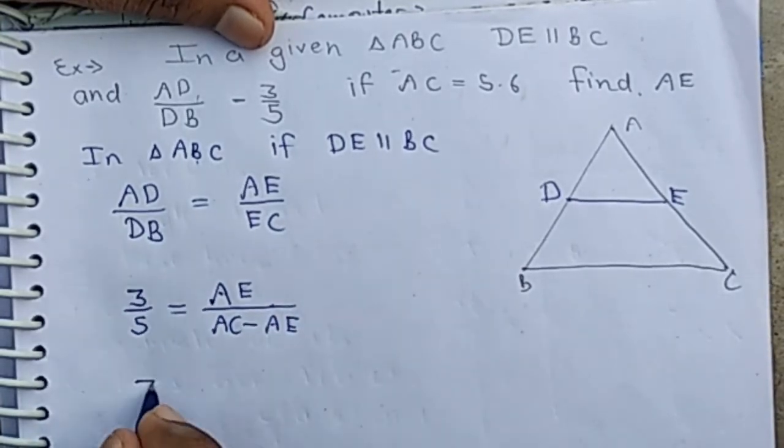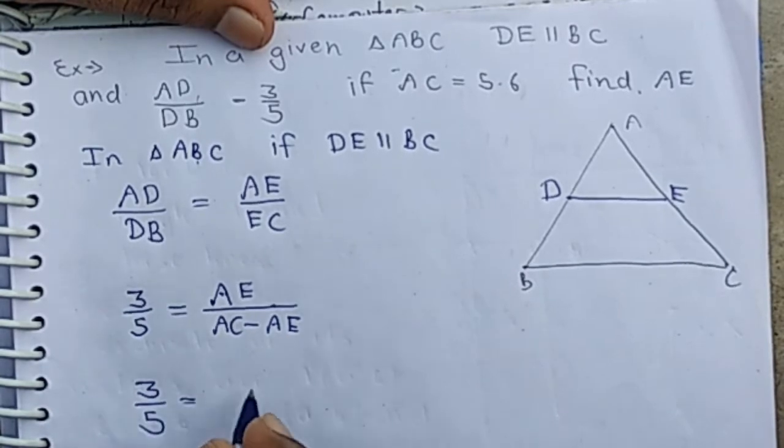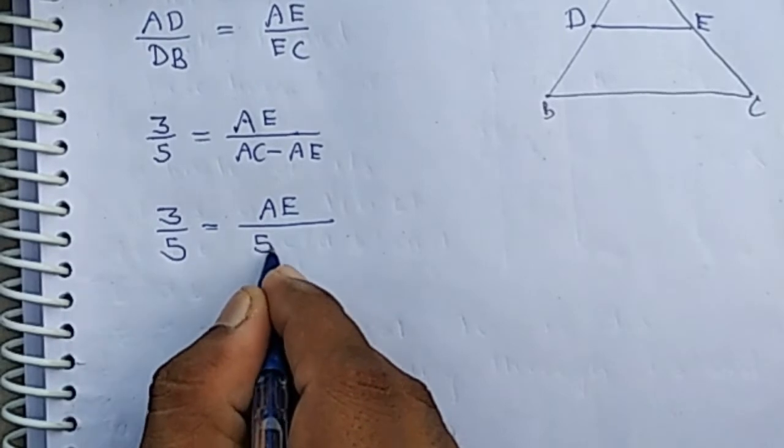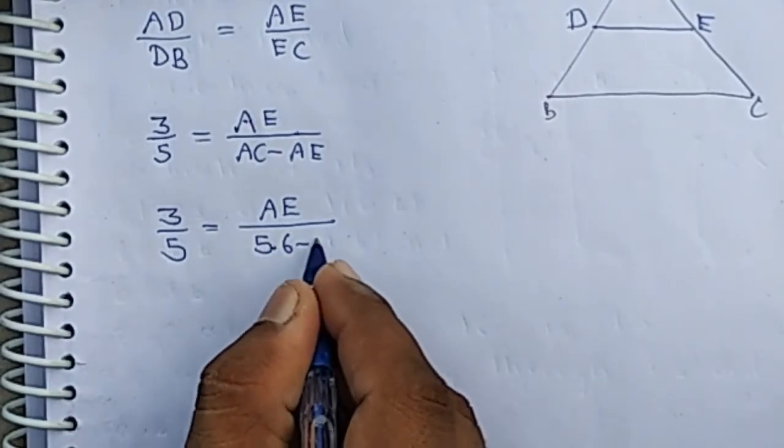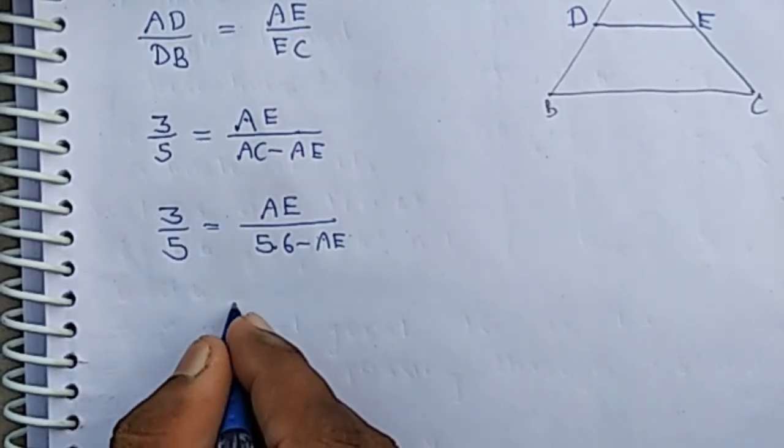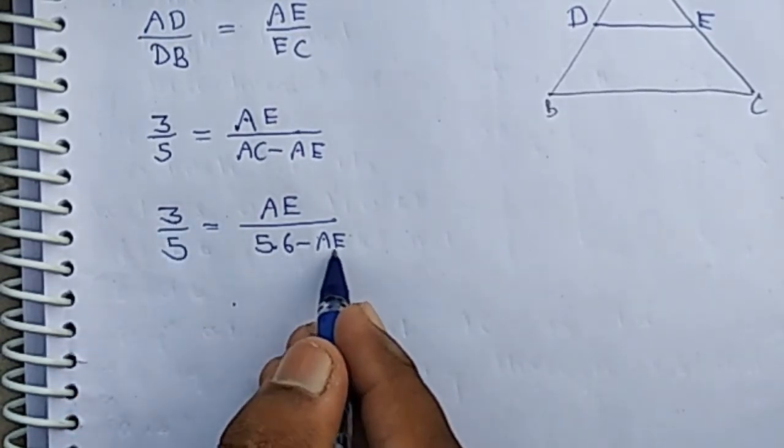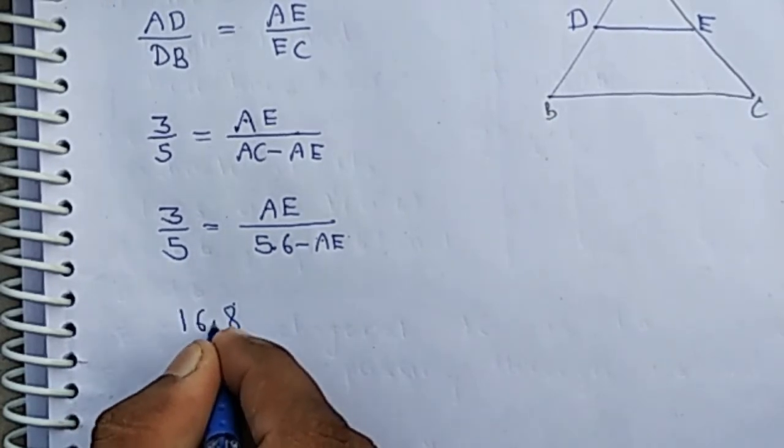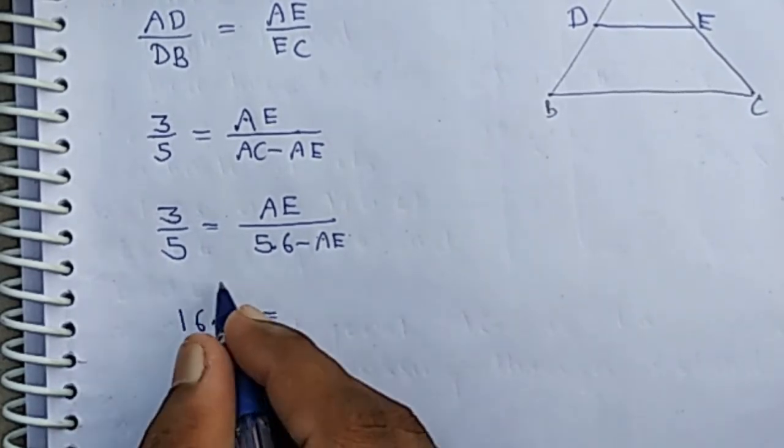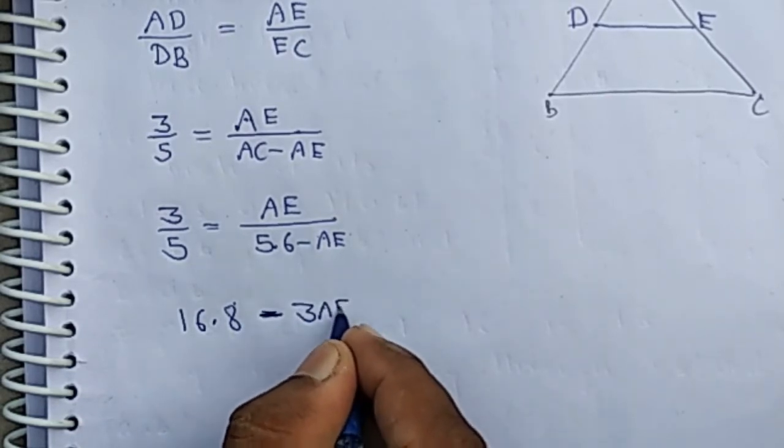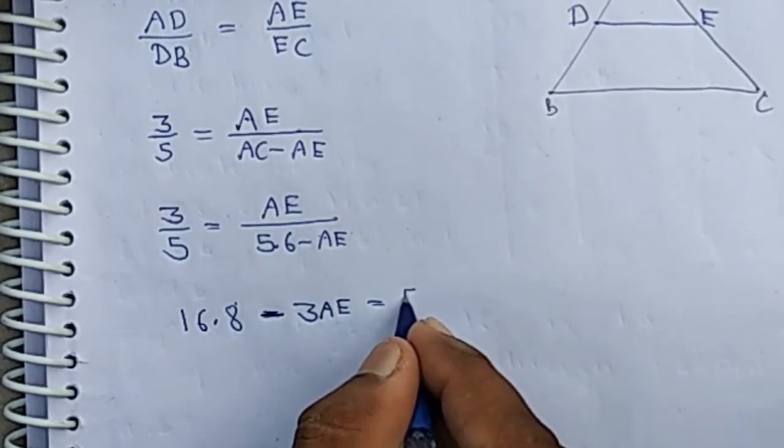Now, the value of AC is given as 5.6, and AE is unknown. Substituting, we get 3 into 5.6 minus AE equals 5 times AE.